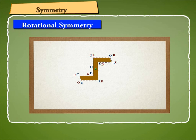Again rotate the cardboard figure through 180 degrees. This time again, the cardboard figure will fit exactly on the white paper figure. The points A, B, C and D of the cardboard figure will fall again on top of the points A, B, C and D of the white paper figure.